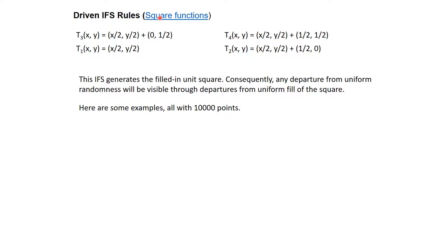Coming back to the square IFS, the standard four-transformation rules are: scaling by half; scaling by half and shifting by half in x; scaling by half and shifting by half in y; and scaling by half and shifting in the diagonal direction by half each. As discussed in a previous lecture, these IFS rules generate the filled-in unit square. Any departure from uniform randomness — if these rules are not applied randomly — means you will not see the filled-in unit square.